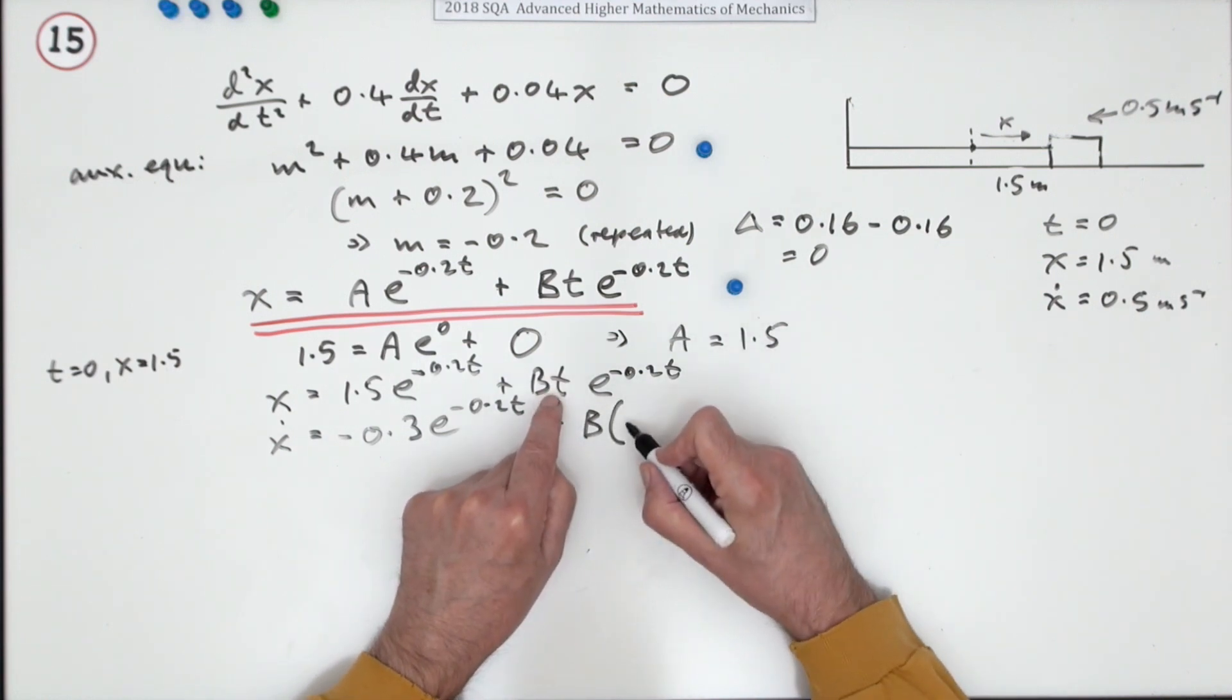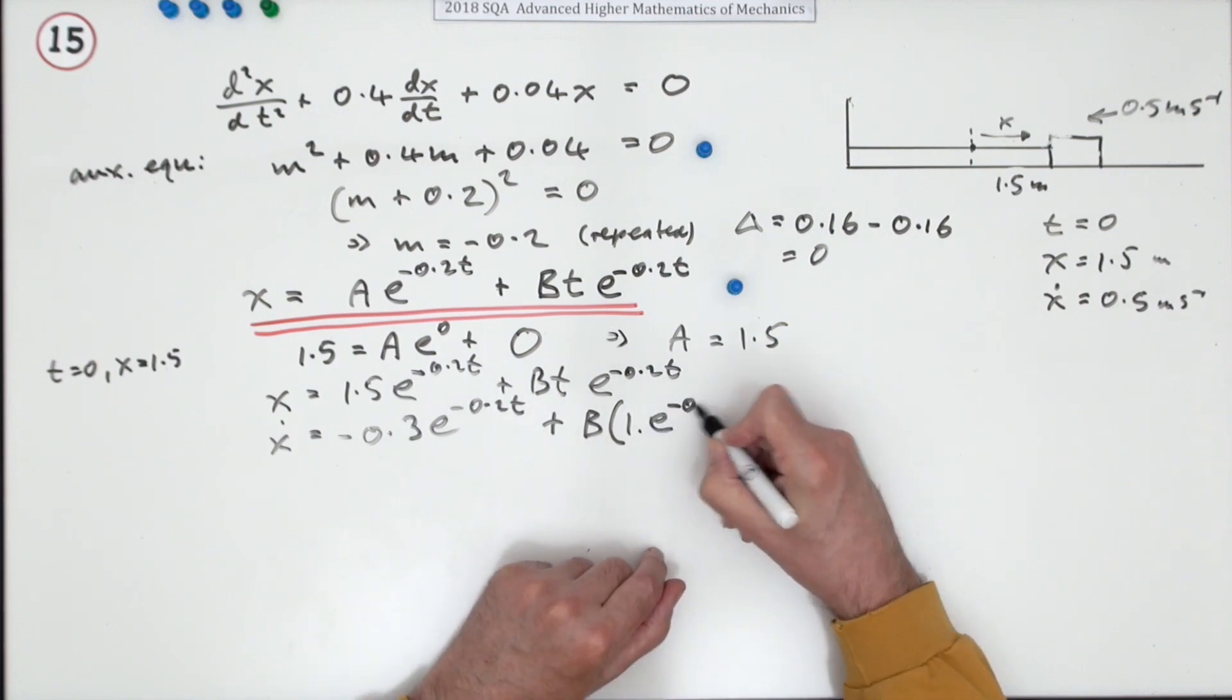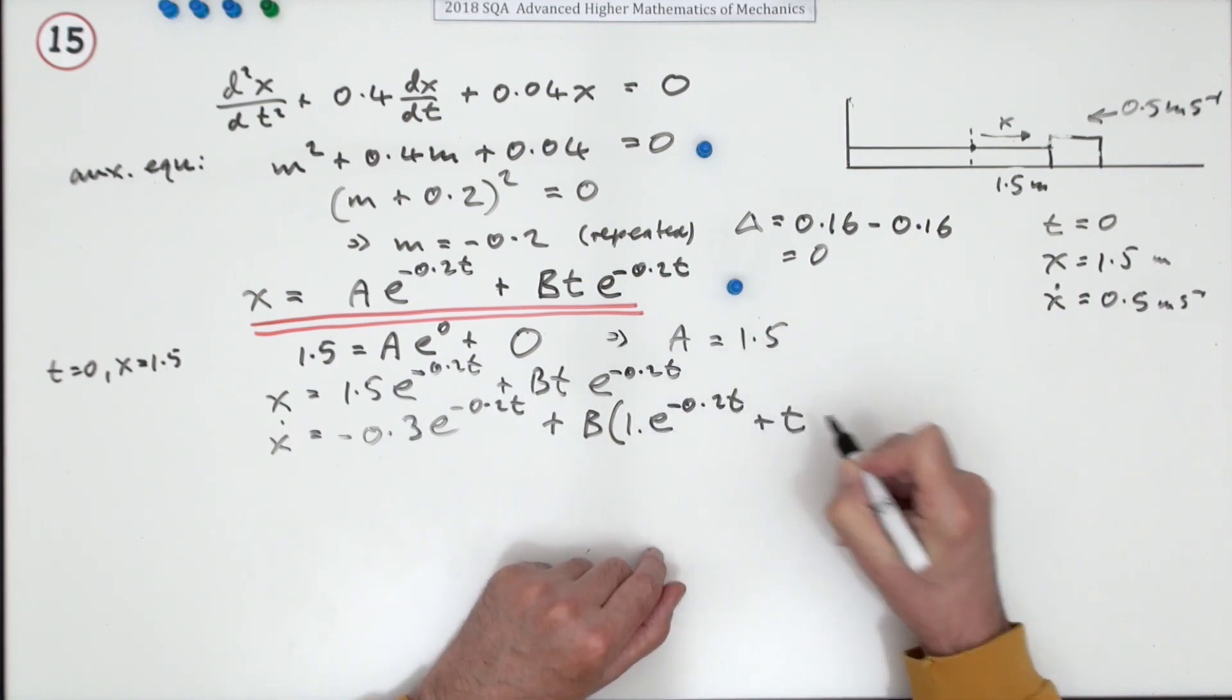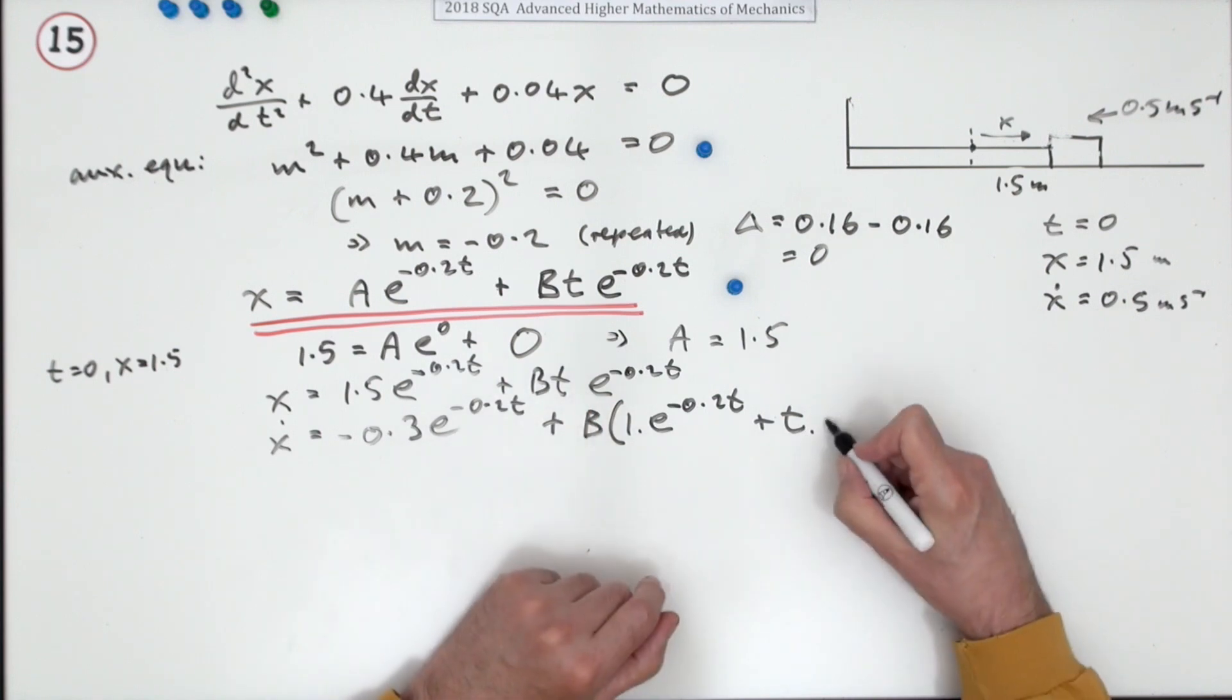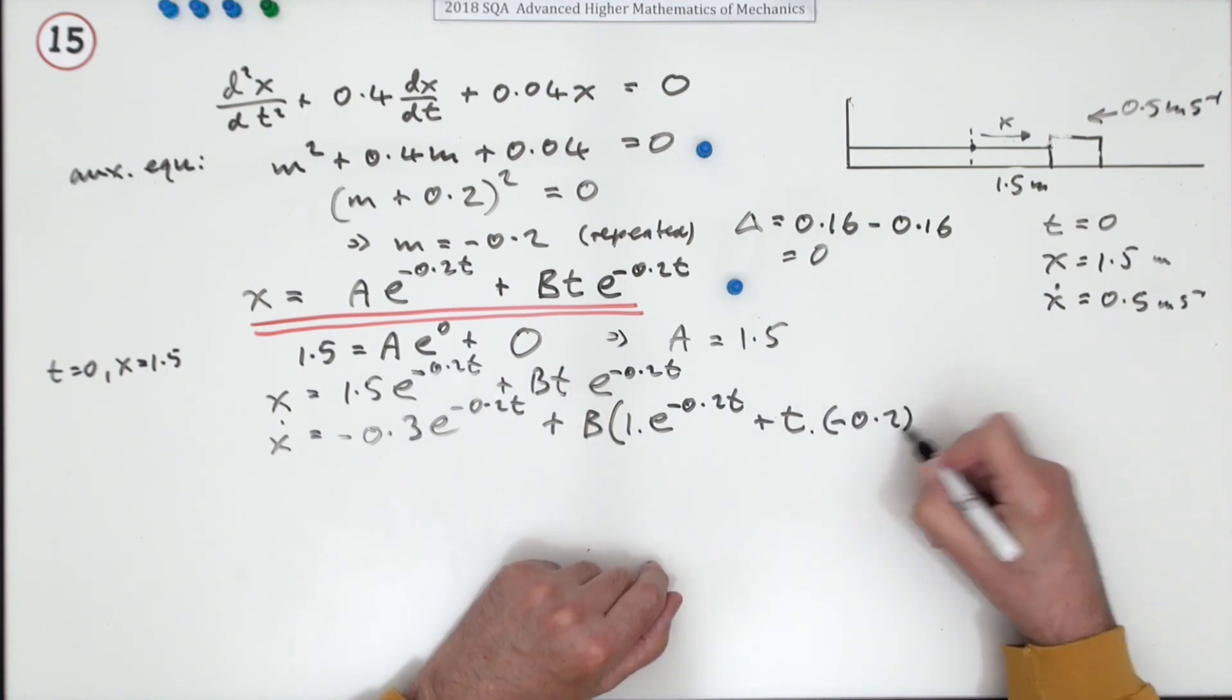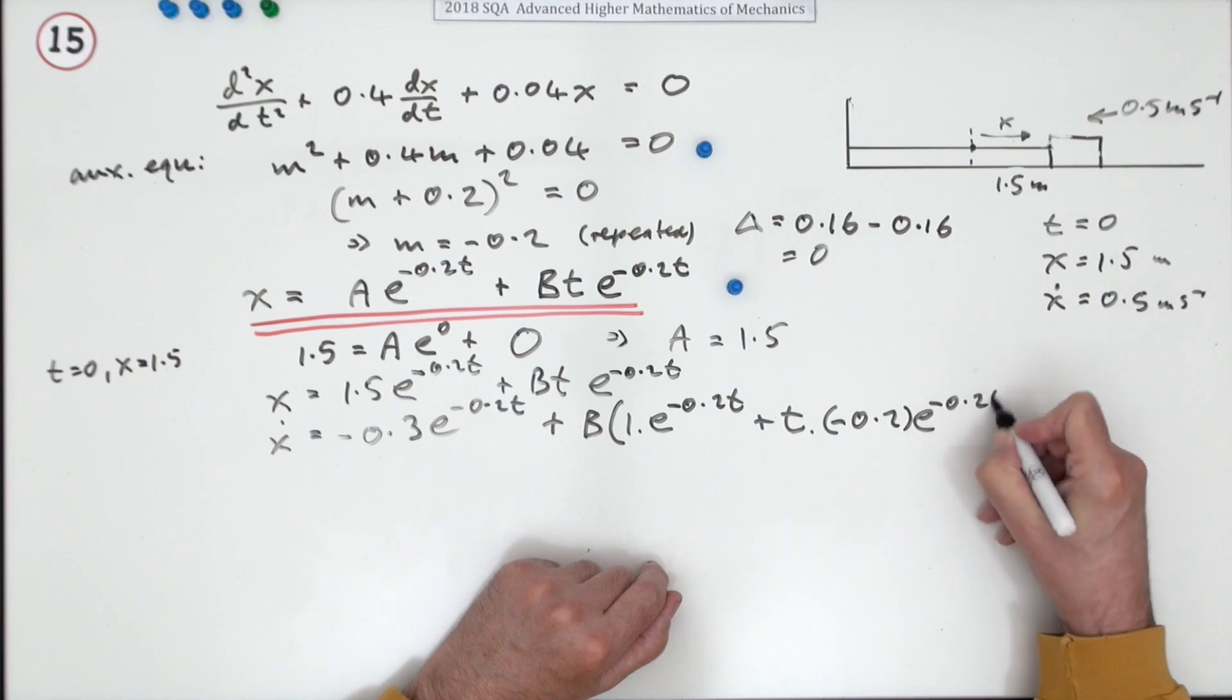So it'll be: differentiate this, which is just 1, I'll show it, 1 times leave that one alone, and then leave that and differentiate that, which will be negative 0.2e to the negative 0.2t.